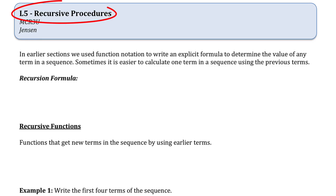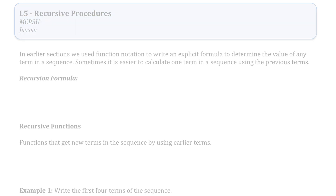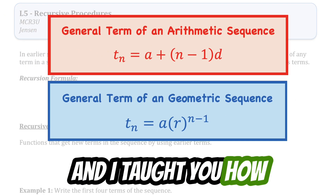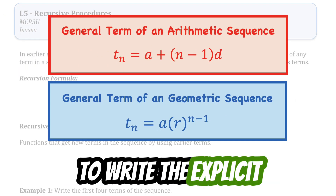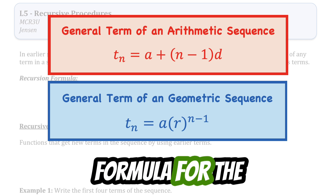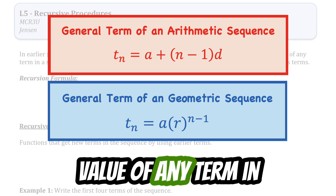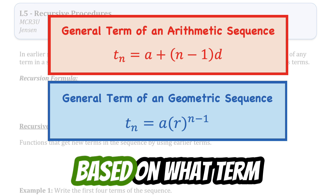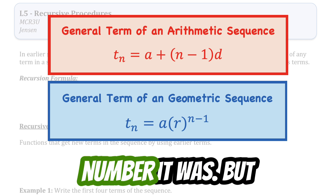Here's lesson 5 of the discrete functions unit. This lesson is on recursive functions. In earlier sections in this unit, we looked at arithmetic and geometric sequences, and I taught you how to write the explicit formula for the value of any term in the sequence based on what term number it was.